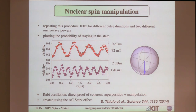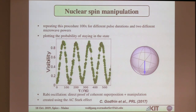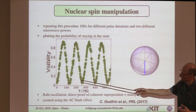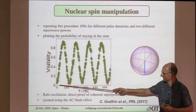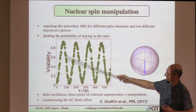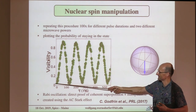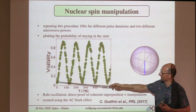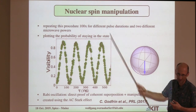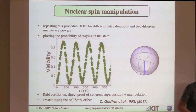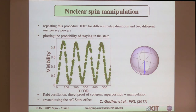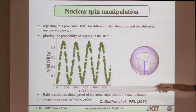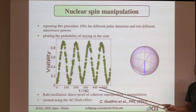You see that these probabilities oscillate — these are called Rabi oscillations. They depend on the power: if I change the power, it oscillates faster, and you can check that there should be some kind of linear behavior. A second student, Clément, continued these studies and did much better, getting much nicer Rabi oscillations.